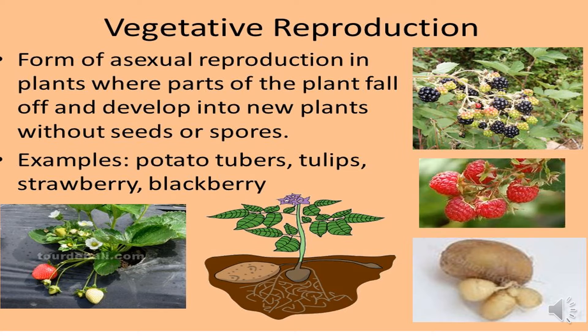Vegetative reproduction is a form of asexual reproduction in plants where parts of the plant fall off and develop into new plants without seeds or spores. Examples include potatoes, tulips, strawberries, and blackberries. You can see here: this is the blackberries, this is strawberries, and this is tubers.